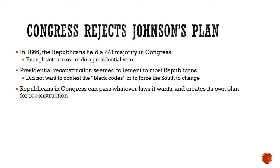Presidential Reconstruction seemed too lenient to most Republicans. They thought that Andrew Johnson wasn't forcing the South to change enough. Johnson didn't want to do anything to stop the Black Codes, and he didn't really care about forcing the South to change. Republicans in Congress disliked this, and because they could pass whatever law they wanted to, they decided to create their own plan for Reconstruction rather than listening to Johnson.